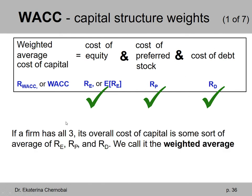So if a firm has all three in its capital structure — meaning it uses money that comes from bonds, preferred stocks, and common stocks — then we need to use some sort of average of the cost of equity, cost of preferred stock, and cost of debt. We call it the weighted average.